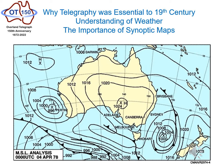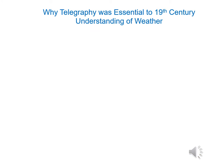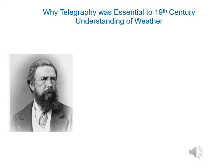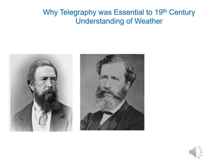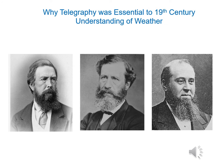In the 19th century the only tool available was the telegraph system. These requirements of volume and speed were starkly evident to early meteorologists, and no more so than to colonial Australia's resident experts: Charles Todd in South Australia, Robert Ellery in Victoria, and Henry Russell in New South Wales.